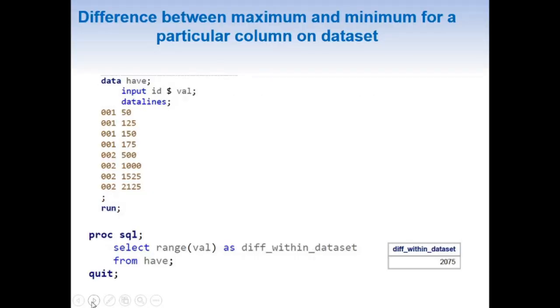Initially, let's focus on how to find the difference between maximum and minimum for a particular column on the whole dataset. Here we have dataset 'have' with two columns. We're going to find the max and min difference for the val column—that is, the difference of 2125 and 50, which equals 2075.